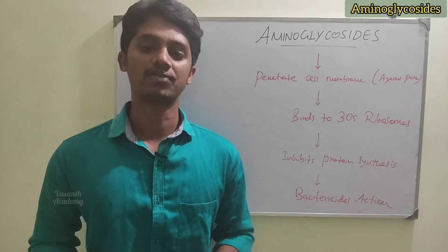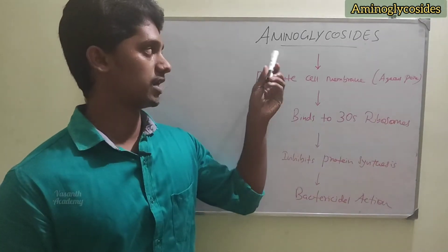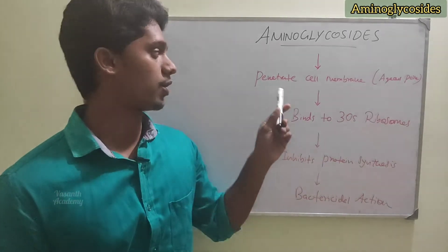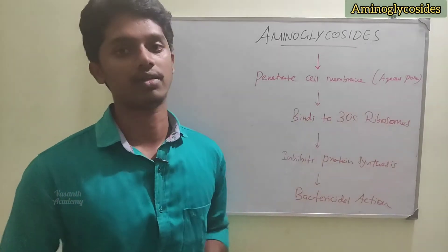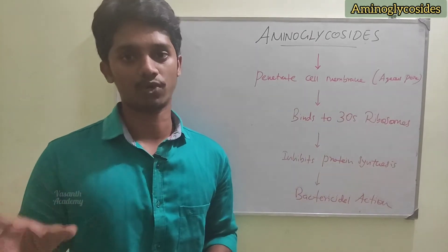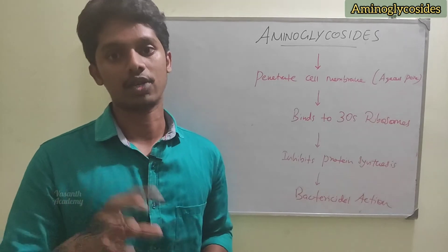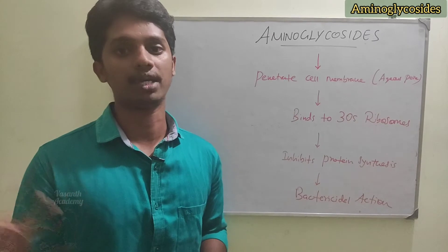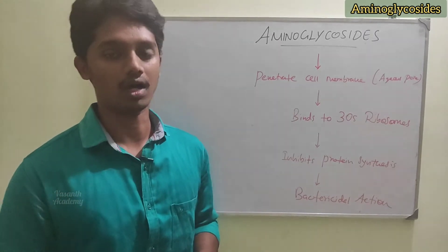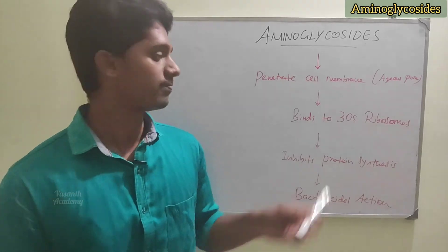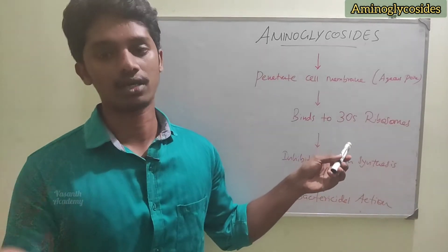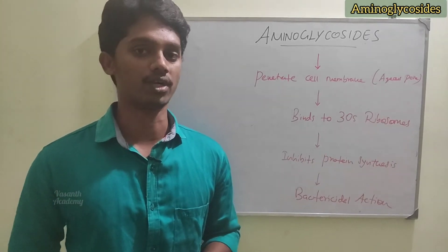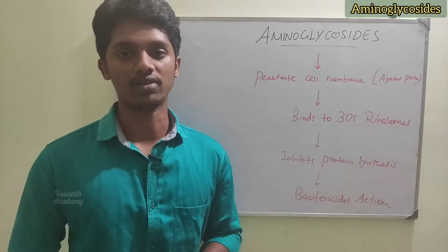Now let's look at the mechanism of aminoglycosides. The drug crosses the cell membrane and penetrates through aquaporins. It crosses the cell membrane and reaches the periplasmic space. Inside the cell there are ribosomes, which perform protein synthesis. Ribosomes have two subunits: the 30S subunit and the 50S subunit. Aminoglycosides bind to the 30S subunit.